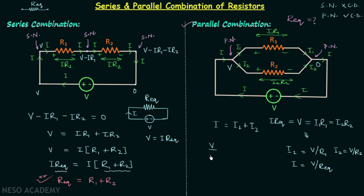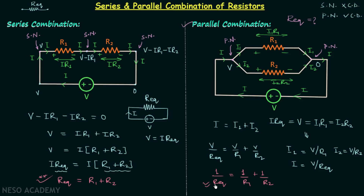Substituting into I equals I1 plus I2: V/R_eq equals V/R1 plus V/R2. Since V is present in the numerator of each term, we can write 1/R_eq equals 1/R1 plus 1/R2. This is how we calculate R_eq for a parallel combination. From this, R_eq equals (R1 × R2) / (R1 + R2). Remember this result.